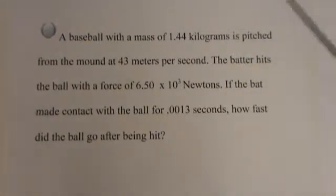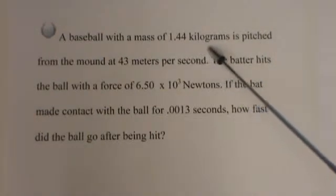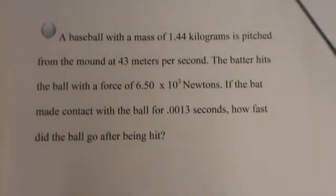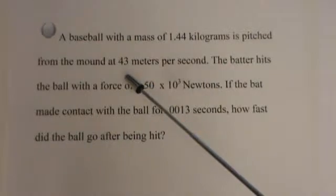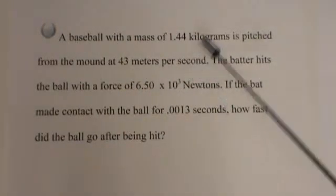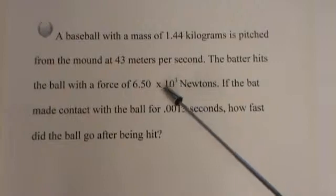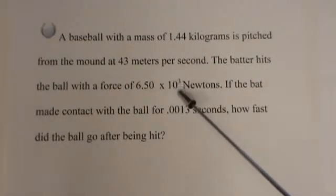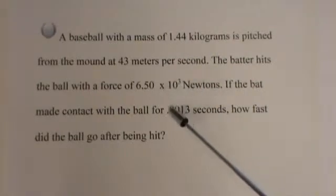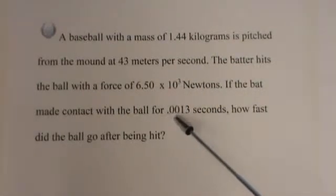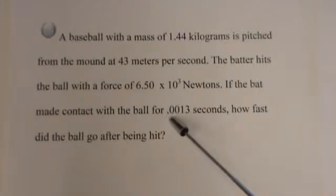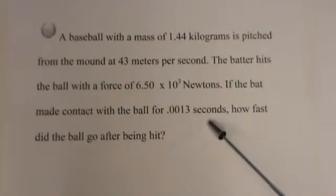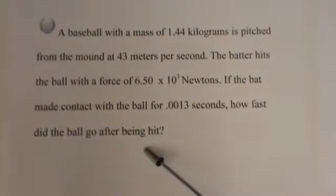Things we know: 1.44 kilograms is the mass of the ball. The initial velocity is 43 meters per second. The force exerted on the ball is 6.5 times 10 to the third newtons. And the time that the ball made contact with the bat is 0.0013 seconds. We need to find the second velocity.